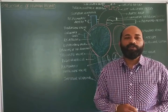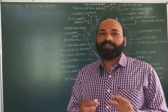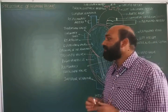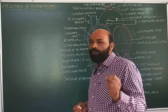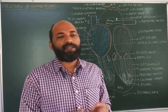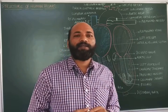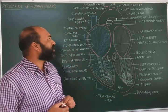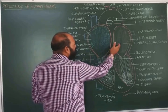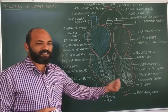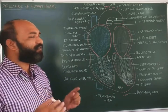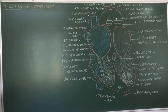Hi everyone. This video is about the next aspect of body fluids and circulation where we are going to discuss the structure of the human heart. According to evolution, the human heart is said to be a four-chambered heart, which mainly consists of two atria and two ventricles. We will discuss the anatomy of the human heart in later aspects, but first let us start with the nature of the human heart.